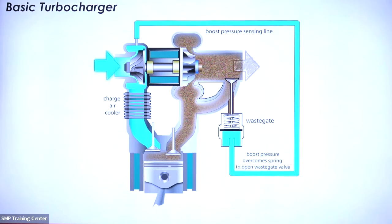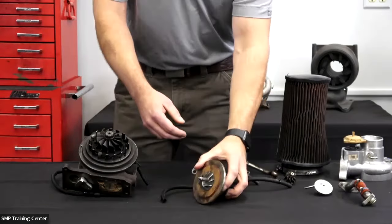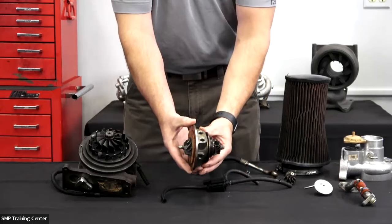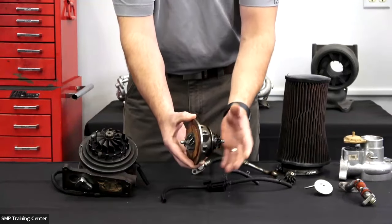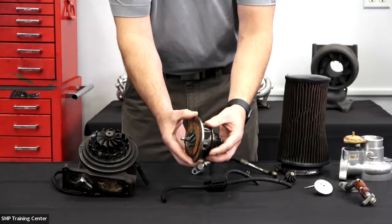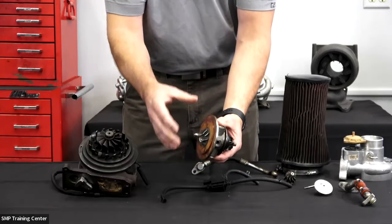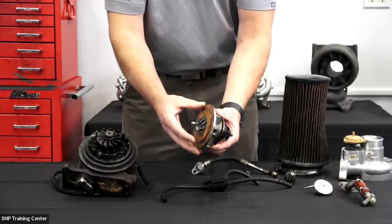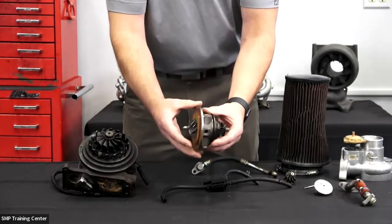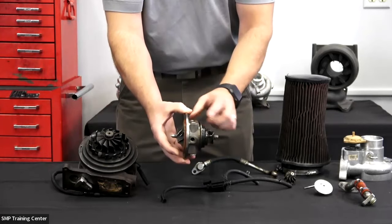Let me show you what a turbocharger looks like on the table. They vary in size depending on the vehicle, but essentially we have the shell of the turbo, we have the electronics of the turbo that are controlled or monitored by the PCM. At the heart of it, the main function of the turbo is right here.